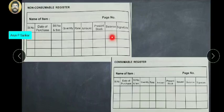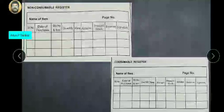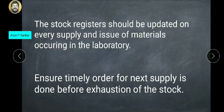We are able to get the balance. The items are filled in one page. This is the consumable register — this is the model. Inside the stock register, we get the page number. The balance is calculated based on supply, and a timely order for the next supply is done before expiration of the stock.